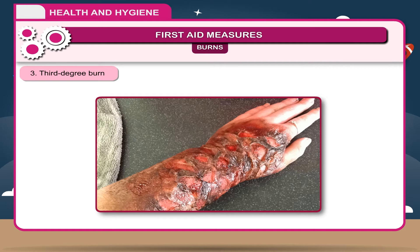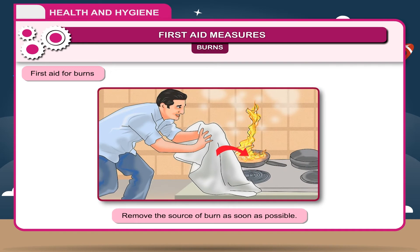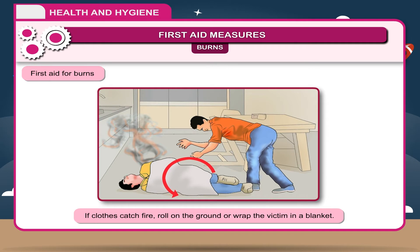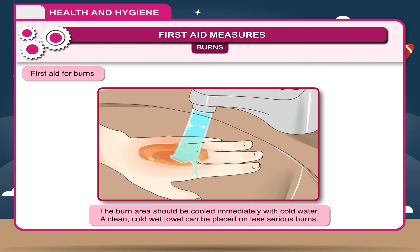Severe burns cause shock and loss of body fluids. A person suffering from third degree burns should be hospitalized as soon as possible. First aid for burns: 1. Remove the source of burn as soon as possible. 2. If clothes catch fire, roll on the ground or wrap the victim in a blanket. 3. The burn area should be cooled immediately with cold water. A clean, cold, wet towel can be placed on less serious burns.